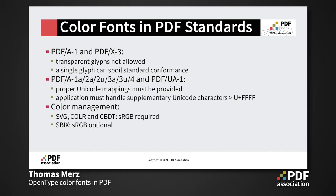The PDF/A and PDF/UA standards require proper Unicode mappings, which can be attached to a Type 3 font in a data structure called the ToUnicode CMap. Regarding emoji, it's important to keep in mind that most emoji characters live outside the Basic Multilingual Plane in Unicode, which means they need more than four hex digits and must be represented as a surrogate pair in the ToUnicode CMap — so the application must implement support for surrogates. Color management is also important: SVG color and CBDT explicitly require sRGB for the use of color, while in Apple's format sRGB is possible but not required.